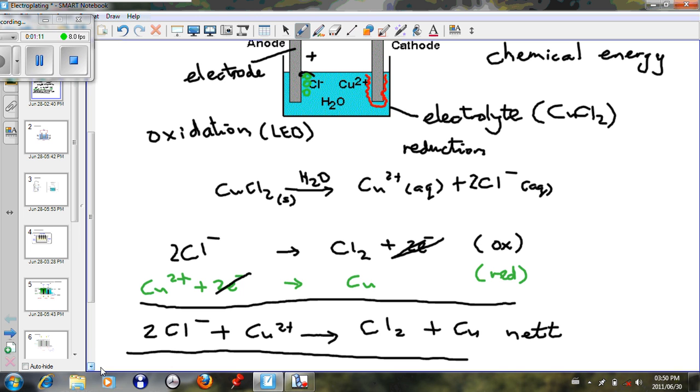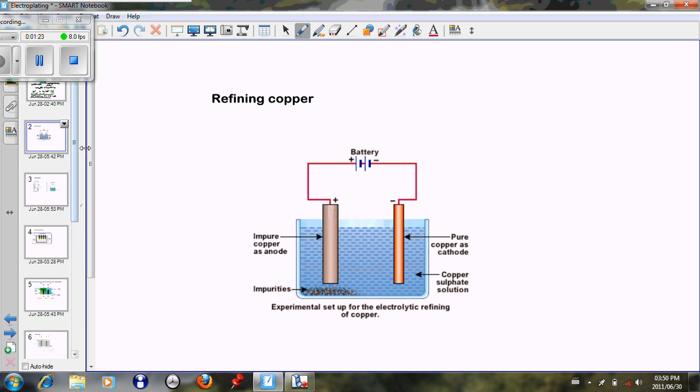Now the question arises: where does this electrolysis take place in everyday life? We just have a few examples which we can look at. One is in the refining of copper.